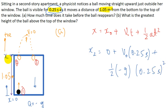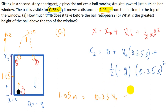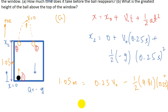The value of x₂ is 1.05 meters since the window is 1.05 meters. Substituting: 1.05 = v₀ × 0.25 − ½ × 9.81 × (0.25)². Solving this equation for v₀, we get v₀ = 5.4 meters per second. This is the velocity of the ball at position one, the bottom of the window.